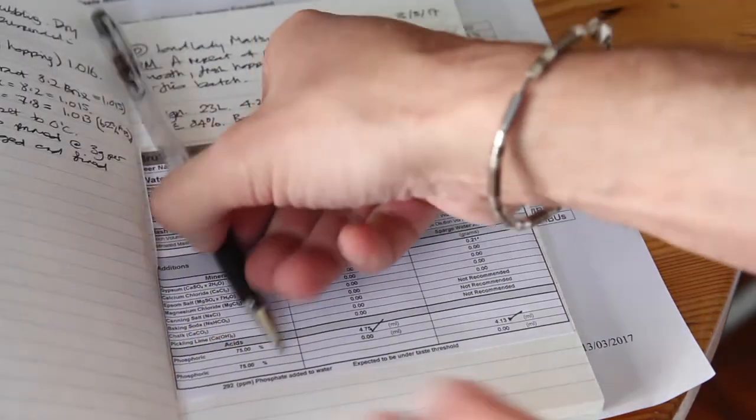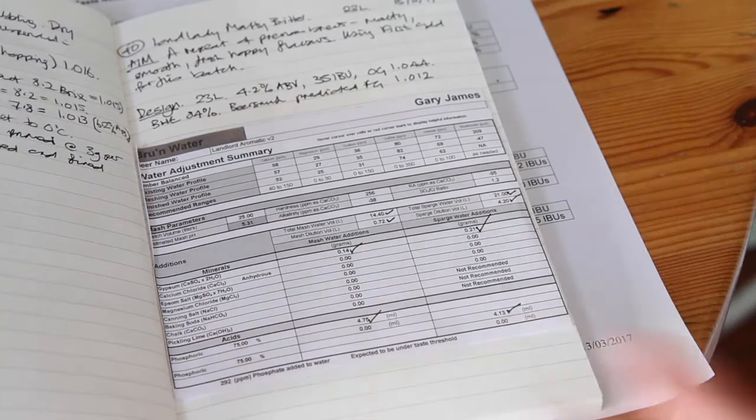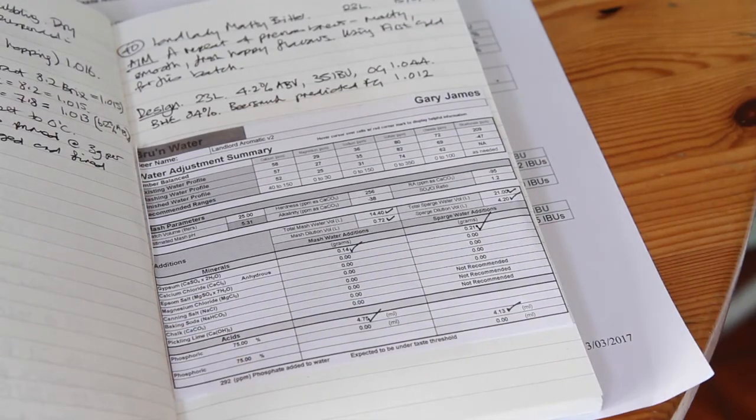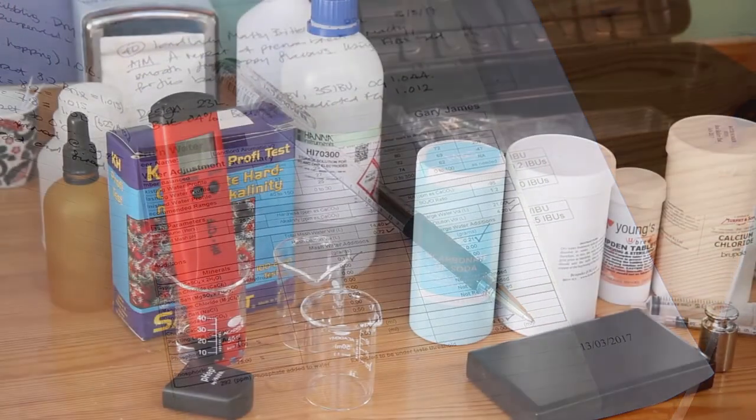Each time you make a water addition, tick it off on your report sheet. It is easy to lose your track and forget what you have added and what you haven't added.